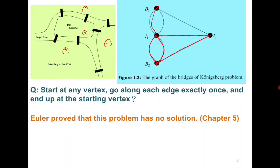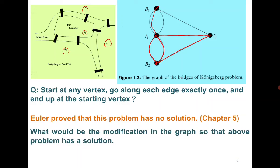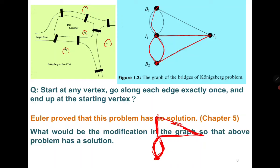But what modification to the graph would make the problem solvable? If you delete the minimum number of bridges so the problem has a solution — for example, deleting two edges — you can then return to the starting position. In general, the condition given by Euler states that for each vertex there must be an even number of edges incident to it.